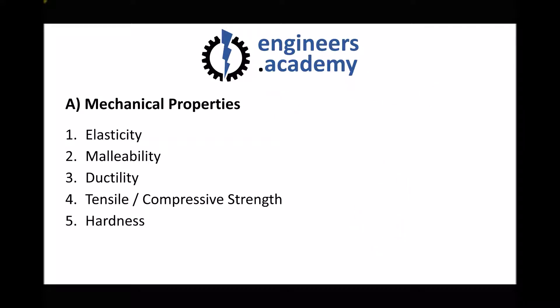Next we have hardness, and the hardness of a material relates to its resistance to scratching and indentation. If a material is hard it will be resistant to scratching and indentation; if that material is soft it will be easier to scratch and indent.